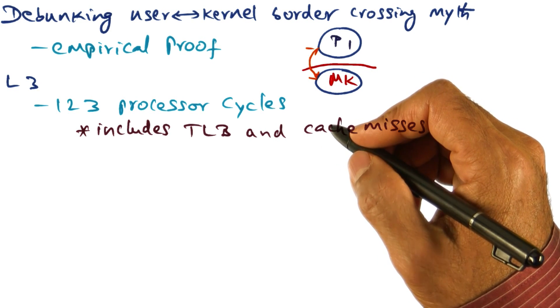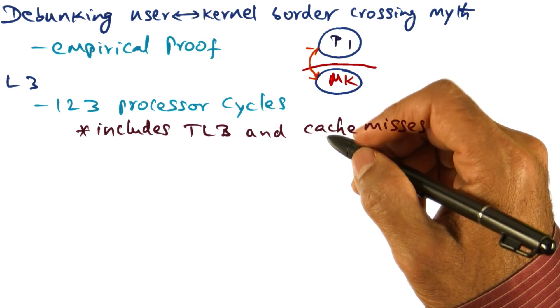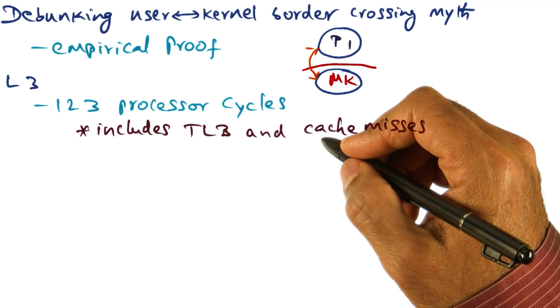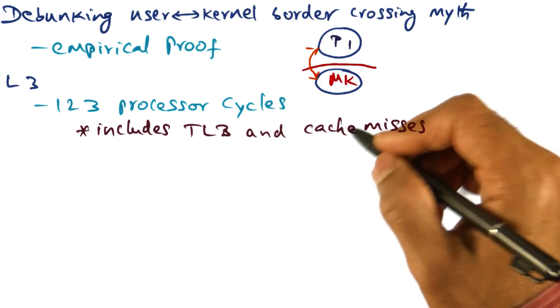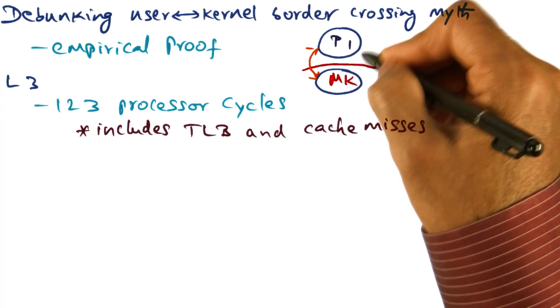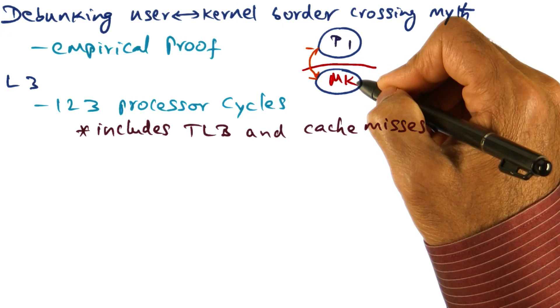As I said, L3, by proof of construction, systematically debunks all of the myths I detailed in the previous slide. The first myth is the border crossing myth, that is, the user space to kernel space switching.